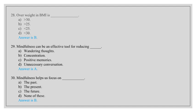Overweight in BMI is less than 25, less than 30. Answer is B, 25 to 29.9. Mindfulness can be an effective tool for reducing wandering thoughts, concentration, positive memories, unnecessary conversation. Answer is A, wandering thoughts.